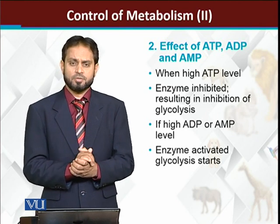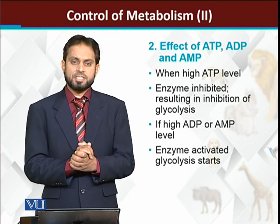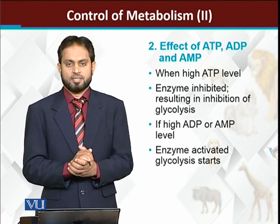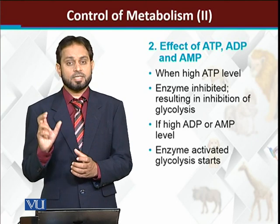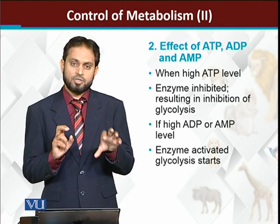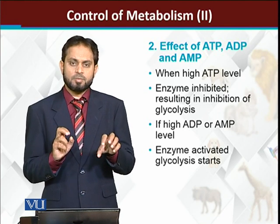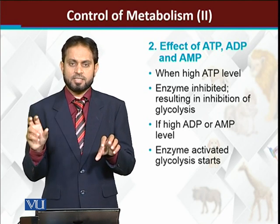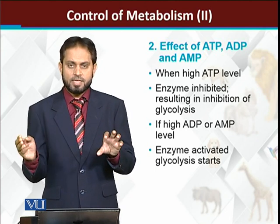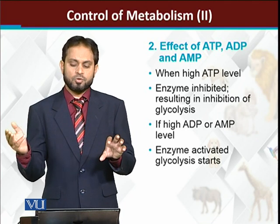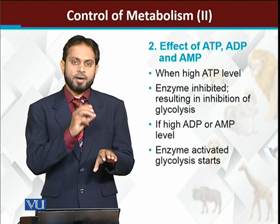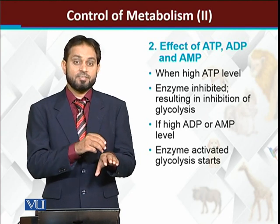There is a third molecule — citric acid. Citric acid is mainly produced in the Krebs cycle, which runs inside the mitochondria. Glycolysis, on the other hand, occurs in the cytosol — inside the cytoplasm. This means the citric acid inside the mitochondria cannot directly affect phosphofructokinase; only those citric acid molecules that cross from the mitochondria into the cytosol will bind with this enzyme and inhibit it.